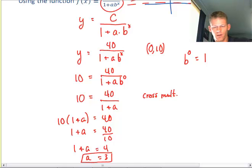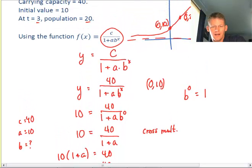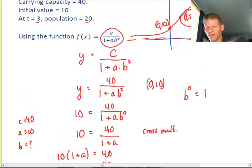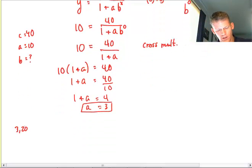So I know my c value is c equals 40, a equals 10. Now I need to find my b value. How do I find that? I'm going to work with the condition at 3 comma 20. So now I'm going to use that point.